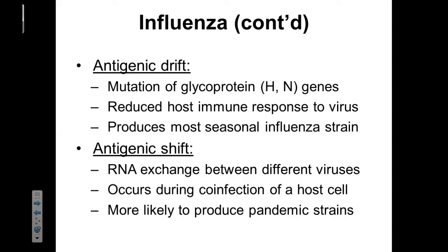There is antigenic drift in influenza. Those glycoproteins — both the H and N genes — are constantly changing and mutating, meaning that new strains of influenza are constantly emerging. We find that depending on the strain, there's a reduced host immune response to the virus. There can be some similarities that allow for a partial immune response to a new strain, but generally speaking, as the virus surface changes, we are going to have reduced immunity.